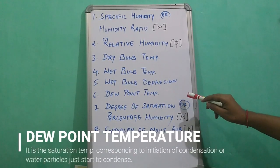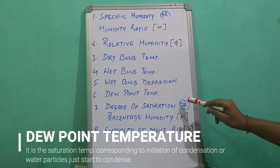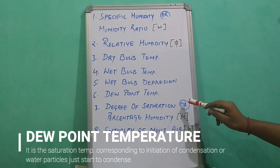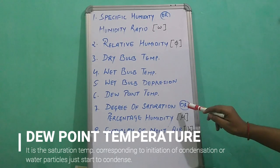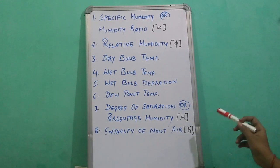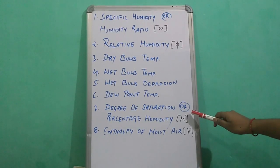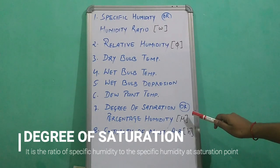Dew point temperature is the saturation temperature corresponding to the initial condensation of water particles — that is, the saturation temperature corresponding to the partial pressure of the water vapor. Degree of saturation, or percentage humidity, is the ratio of specific humidity to the specific humidity at the saturation point.